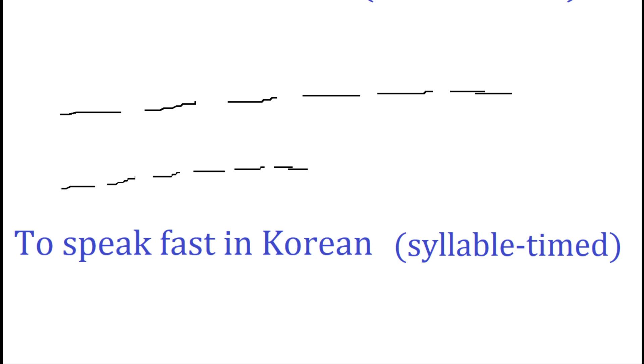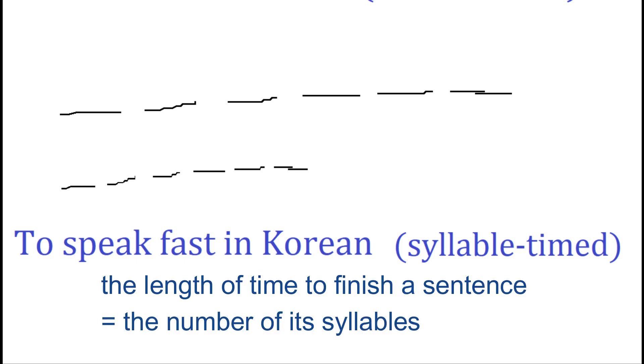Since syllables provide rhythm in Korean, Korean is called a syllable-timed language. In a syllable-timed language, the lengths of time to finish a sentence and the number of syllables in the sentence co-vary. That is, how long it takes to finish a sentence is determined by the number of syllables in the sentence. So if we want to speak fast in Korean, we should make all syllables sound short.